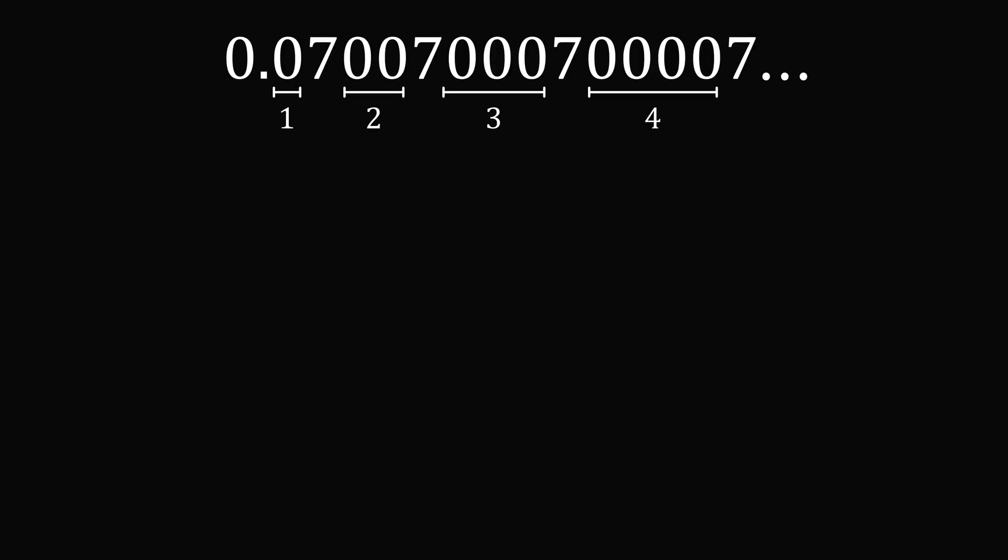So let's analyze the position of the sevens in the decimal. Let's say we have n representing the number of seven that's appearing, and then a(n) is the position of it. So the first seven appears in spot number two. The second appearance of seven is in spot number five. Then the third appearance of seven, if we count carefully, will be in spot number nine.